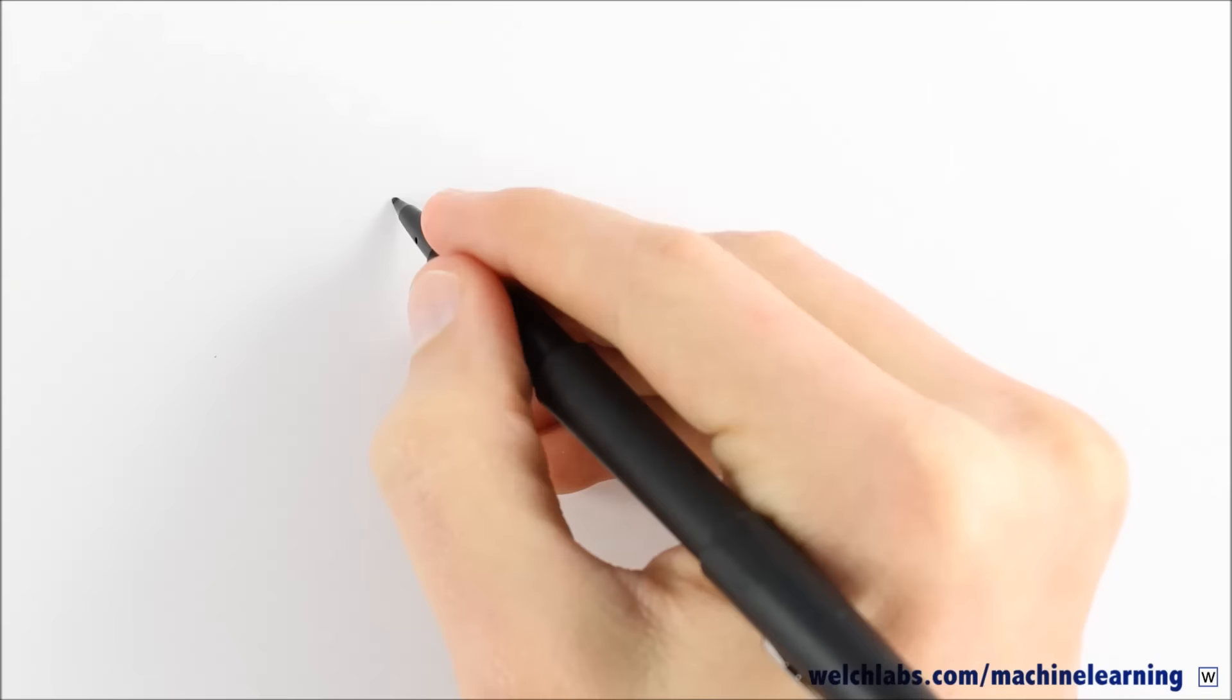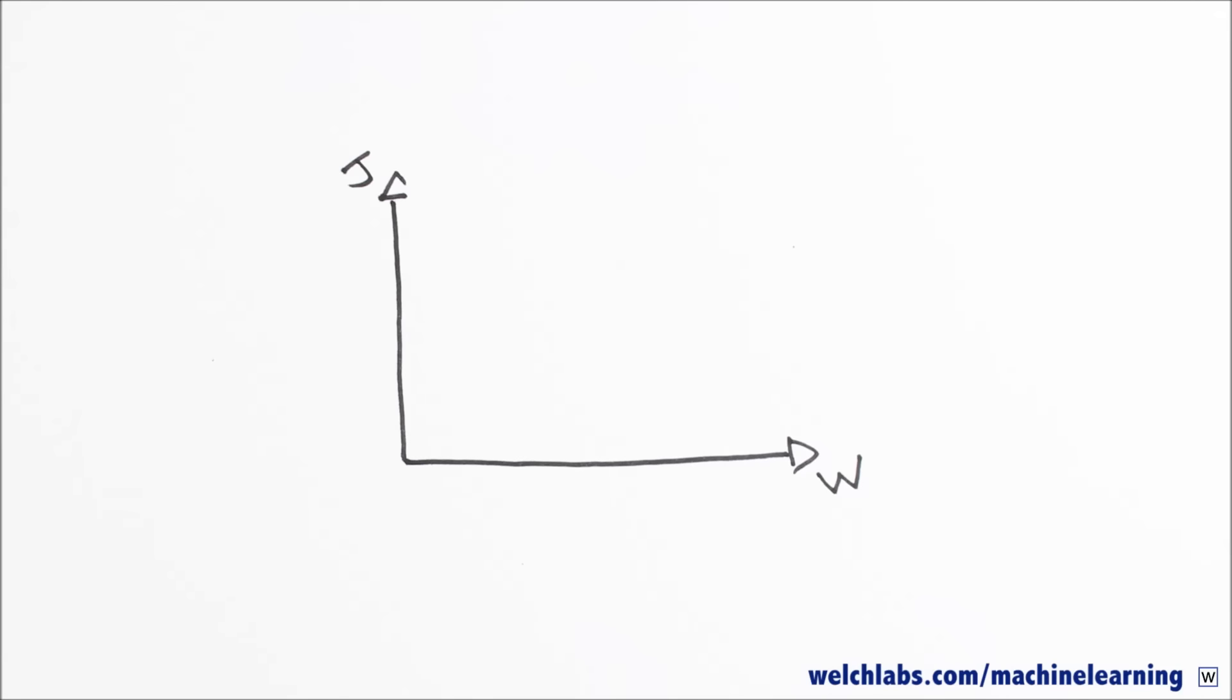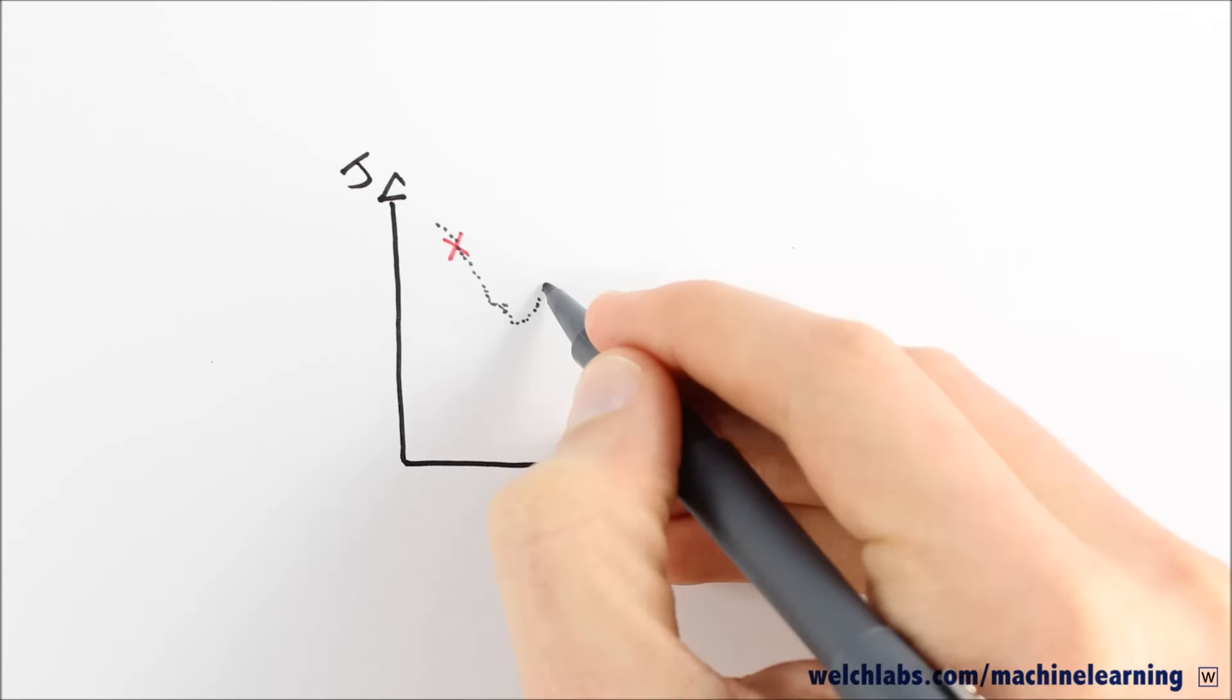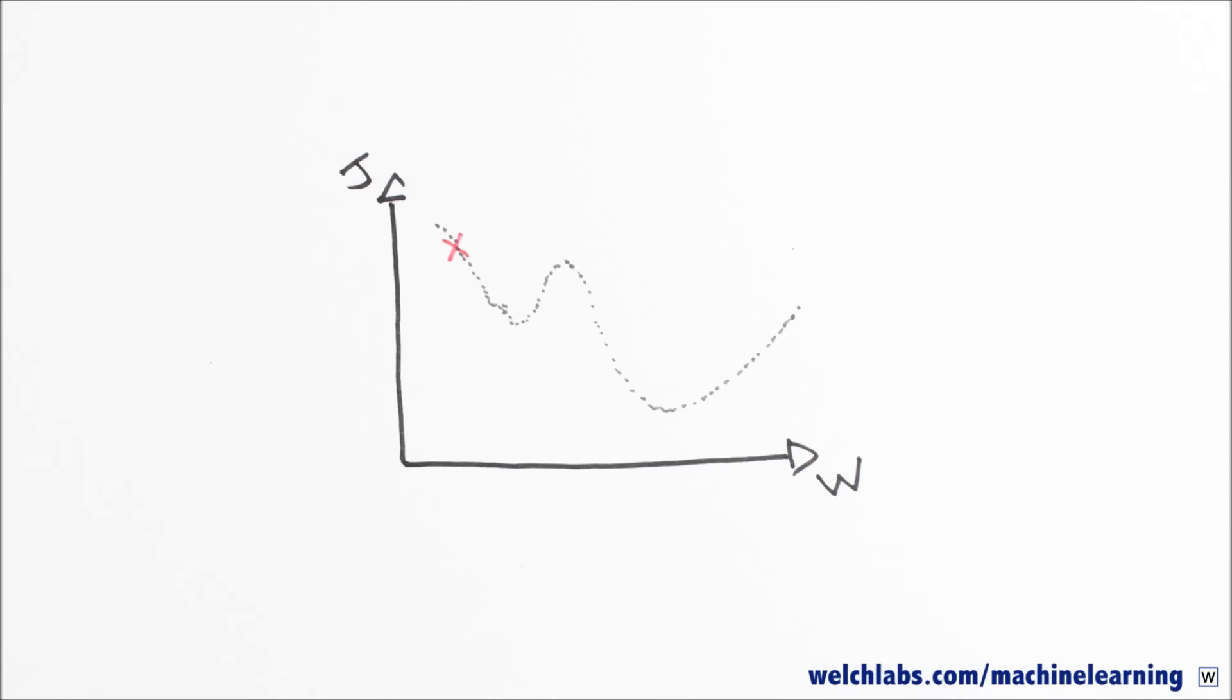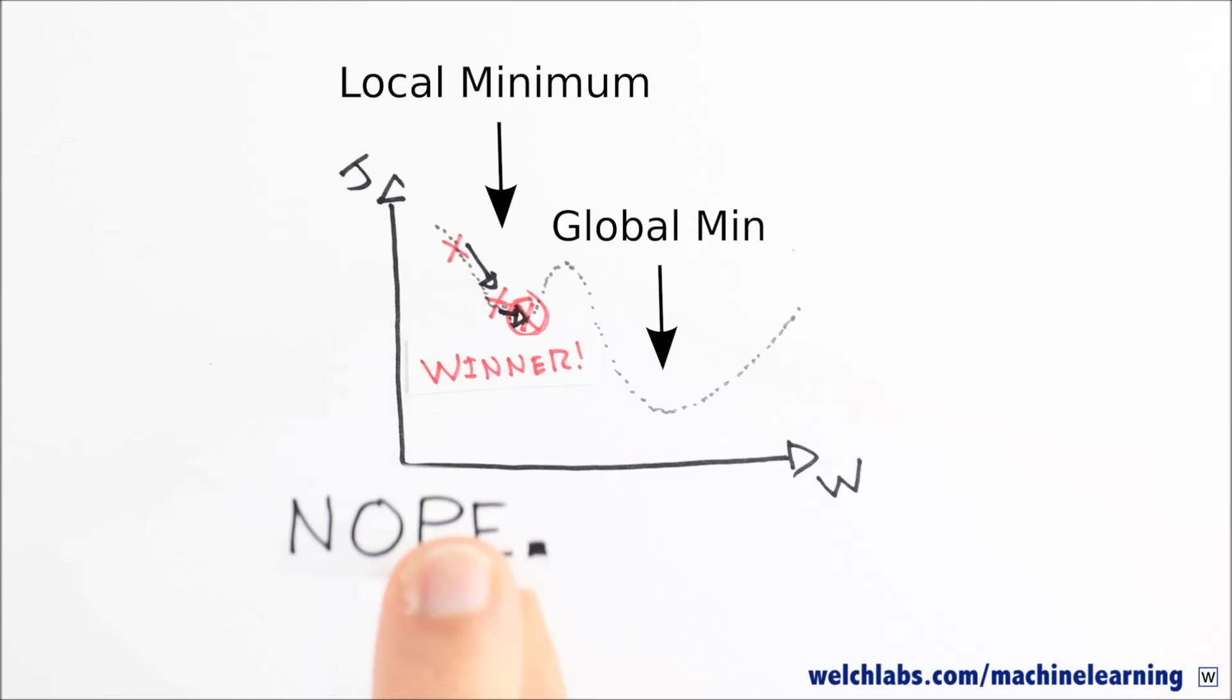Now, before we celebrate too much here, there is a restriction. What if our cost function doesn't always go in the same direction? What if it goes up and then back down? The mathematical name for this is non-convex, and it could really throw off our gradient descent algorithm by getting it stuck in a local minimum instead of our ideal global minimum.